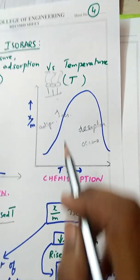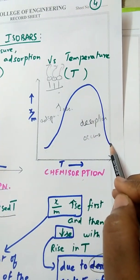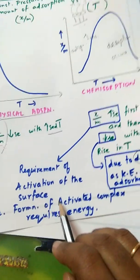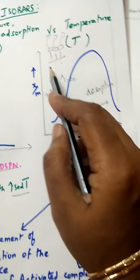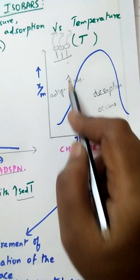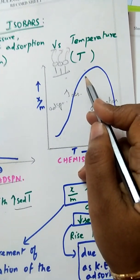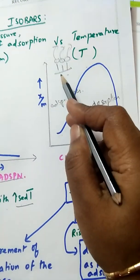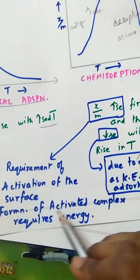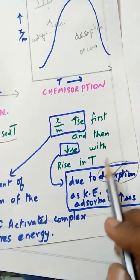In the case of chemical adsorption, with increase in temperature, adsorption is found to increase initially and then starts decreasing. It increases initially due to the requirement of activation of the surface — formation of an activated complex requires energy, so the adsorbent adsorbs molecules forming bonds, utilizing the energy provided by the rise in temperature. Later, with a high rise in temperature, the bonds formed start breaking and adsorbate molecules get desorbed. Hence x/m increases first due to formation of the activated complex, and then decreases due to desorption as kinetic energy of adsorbate molecules increases with rise in temperature.